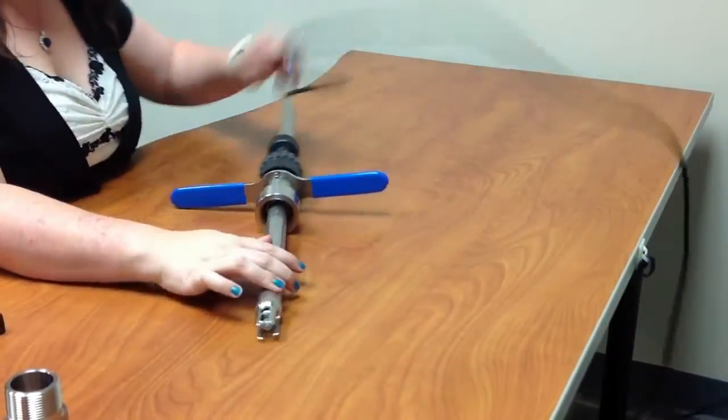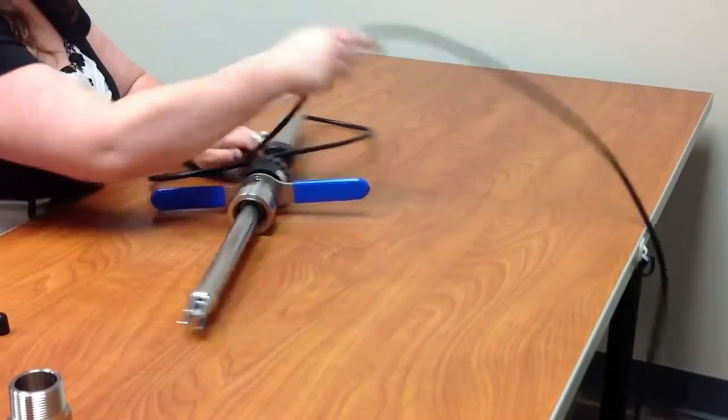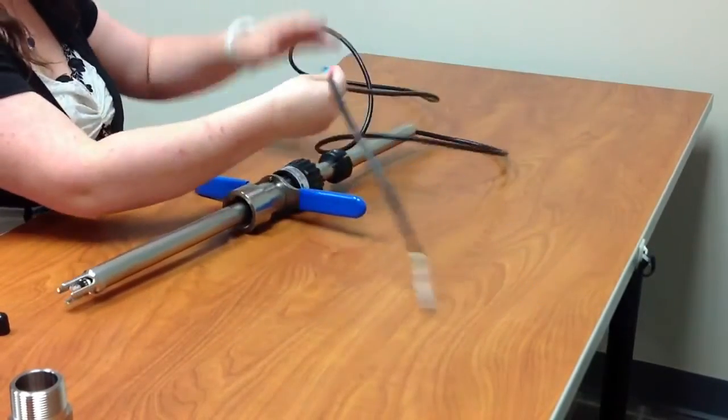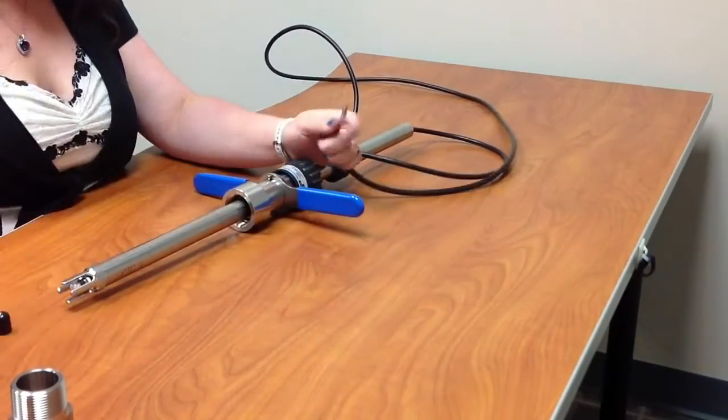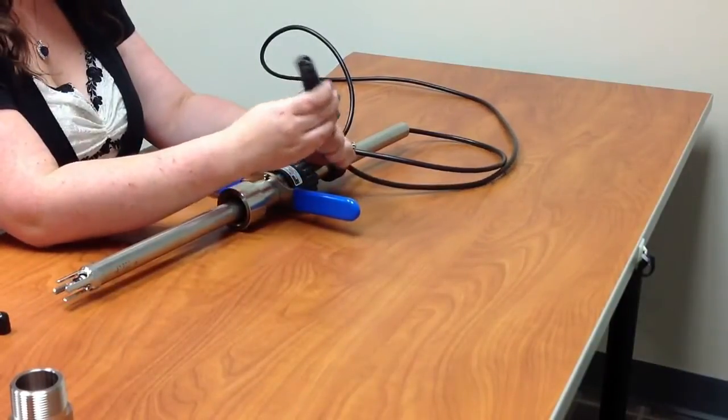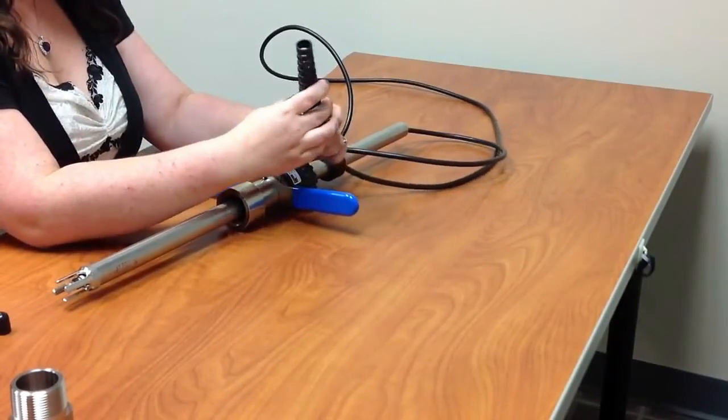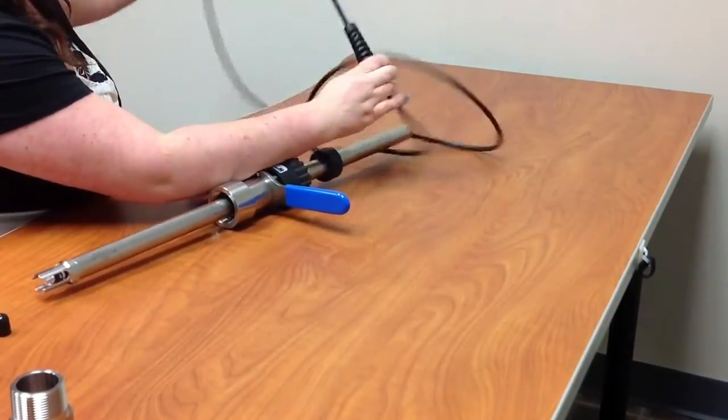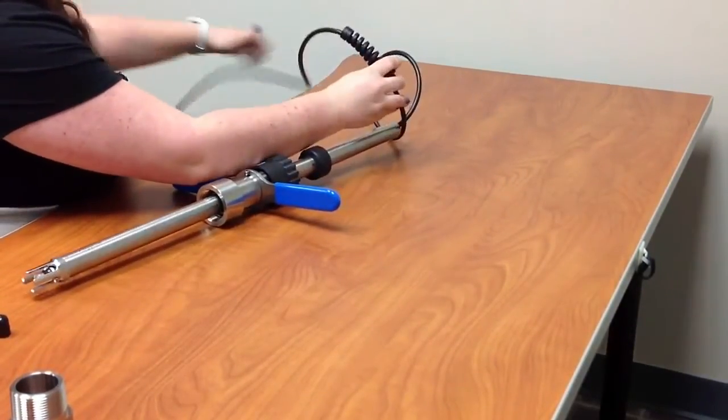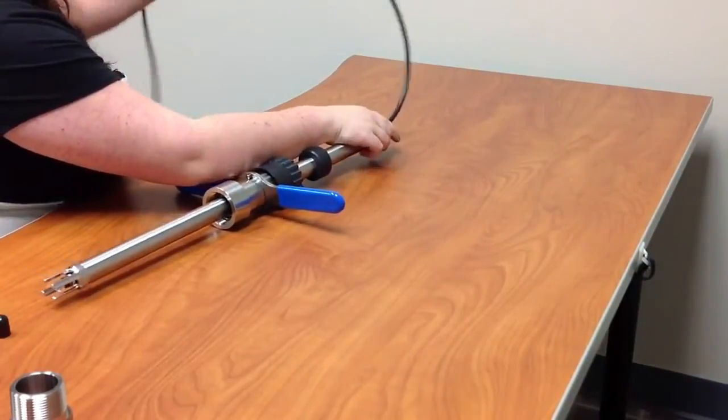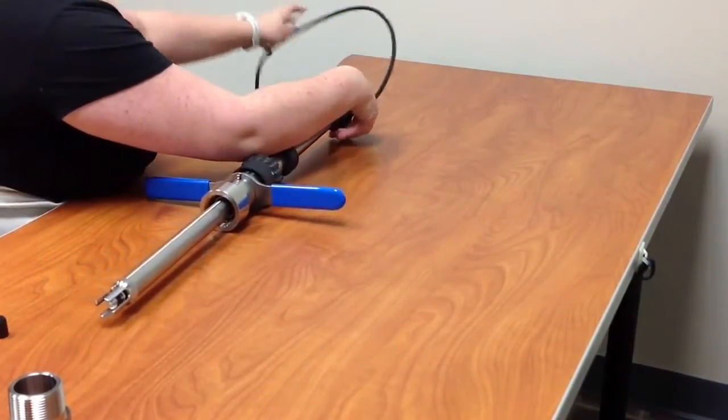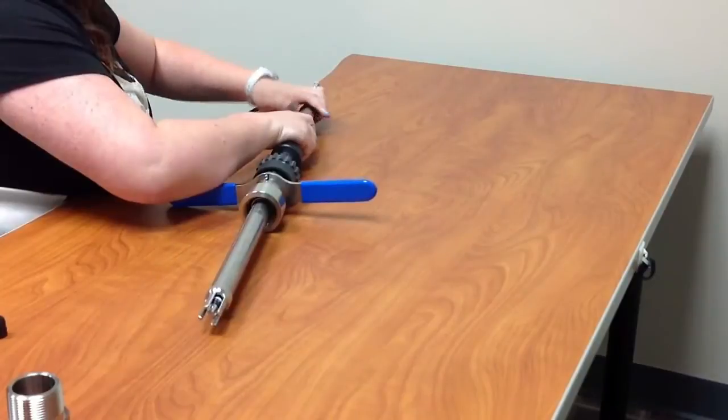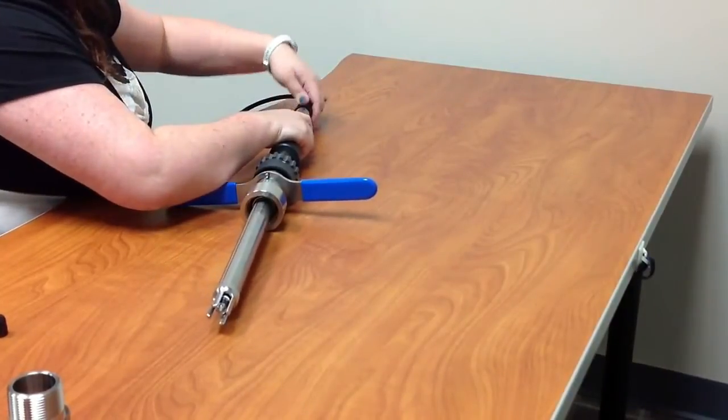Then you're going to take your cable strain relief gland, and this is why if you tape them together it makes it a lot easier for installing this piece right here. Otherwise the individual leads would get hung up in the strain relief gland. Stick it on and thread it onto the back of your PR-10.